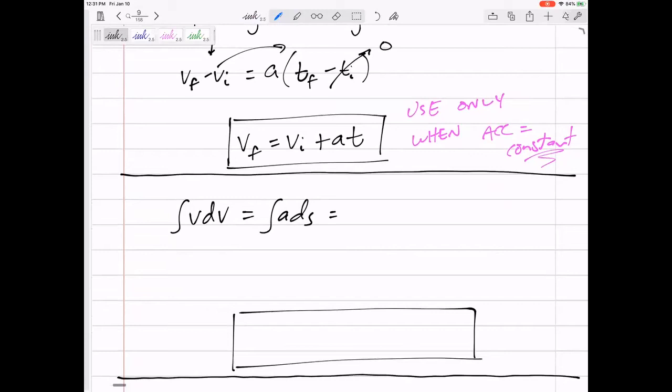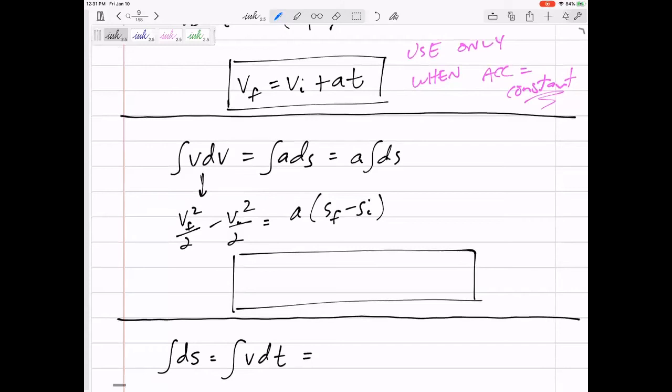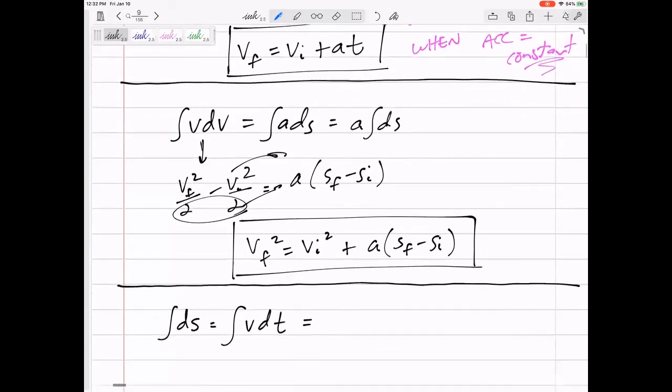All right, if acceleration is constant for this one, let's bring the a outside of the equation. Y'all know the integral of v is v squared over two. Let's do the final squared over two, the initial squared over two, times a. This would be s—the integral ds is s, but we need to evaluate it at sf and si. I'm going to multiply this two up to the other side of the equation, subtract this over.